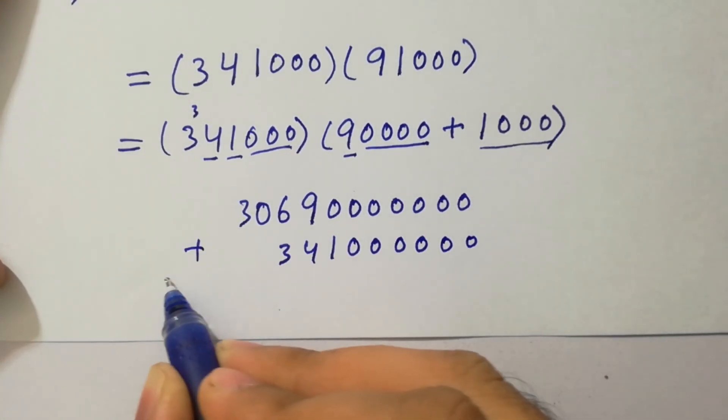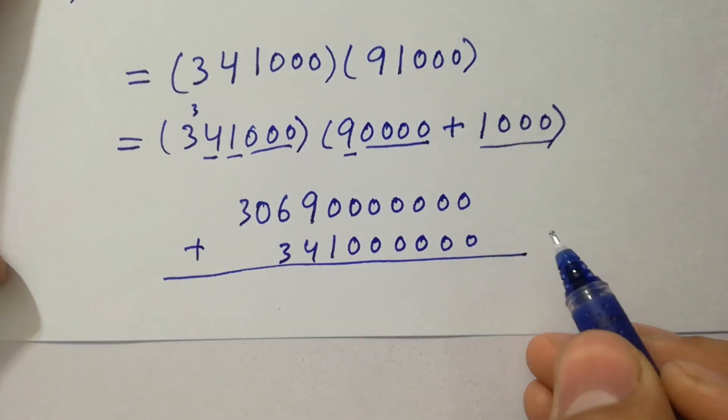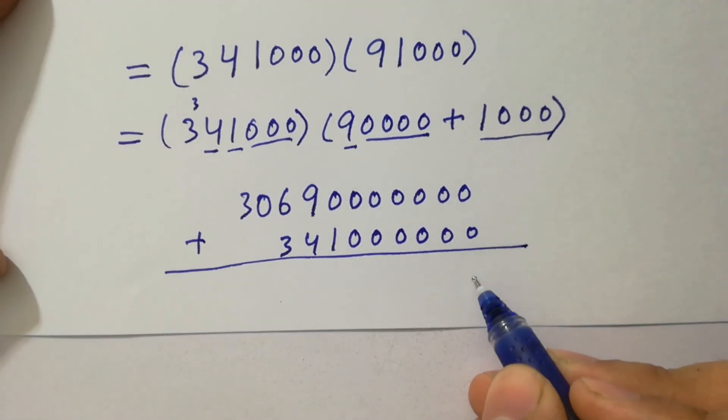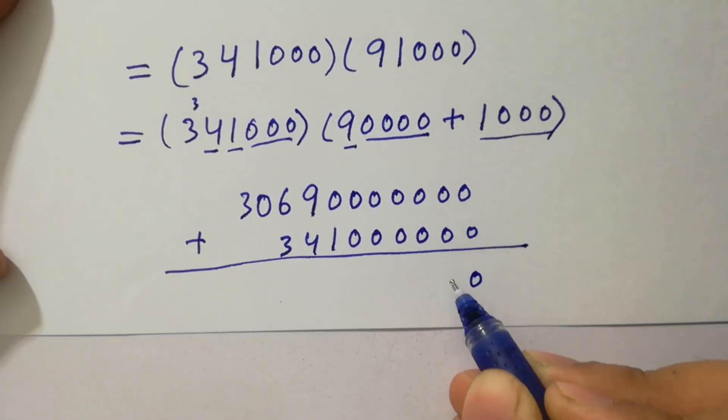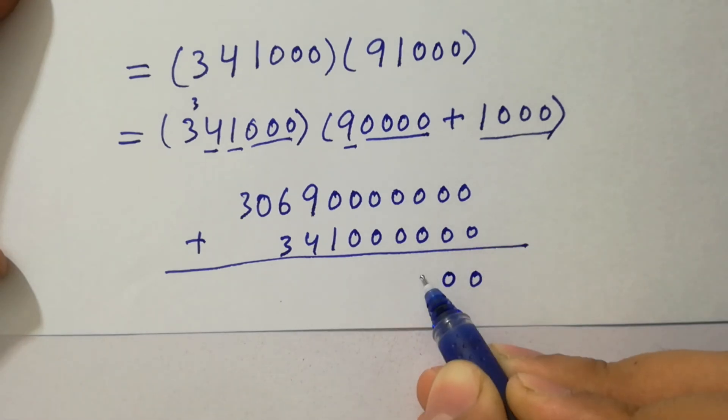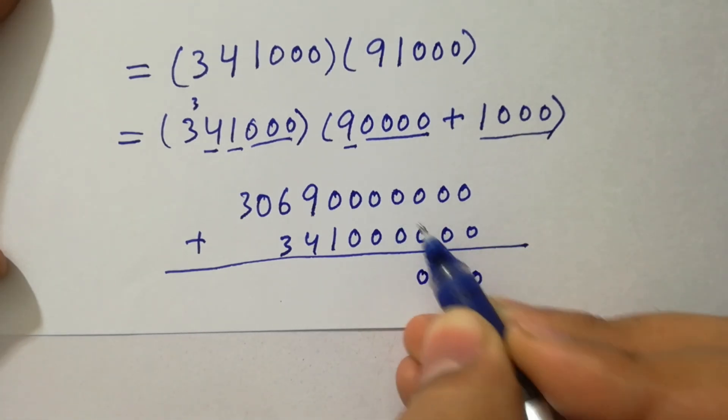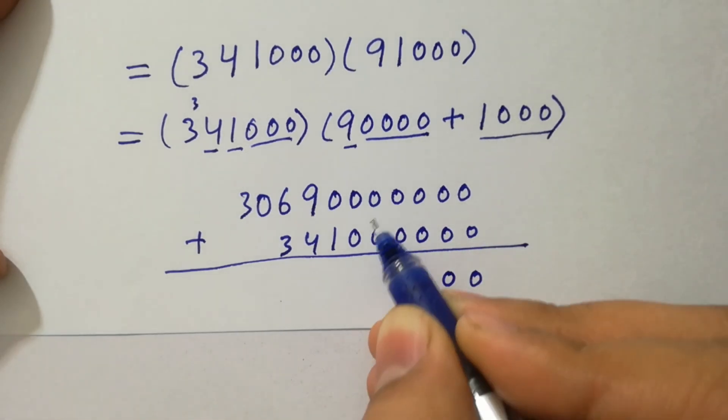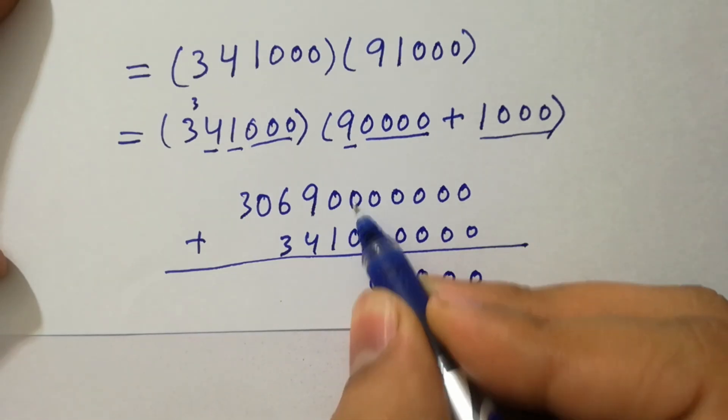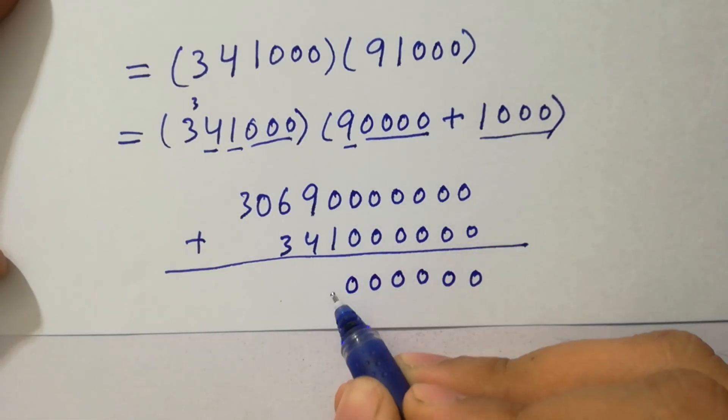I am going to add them. Then we will get our final output here. Here, 0 plus 0 is 0. 0 plus 0 is 0. 0 plus 0 is 0. Here we have 0 plus 0 is 0. 0 plus 0 is 0. 0 plus 0 is 0. 0 plus 1 is 1.